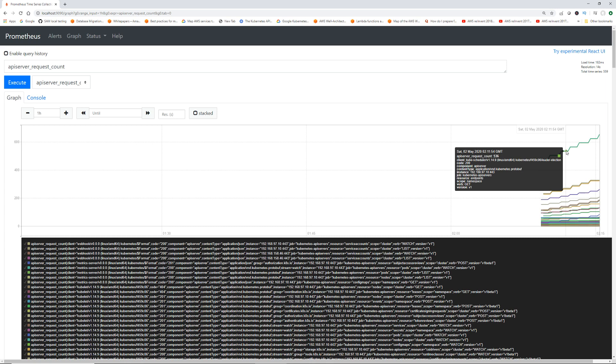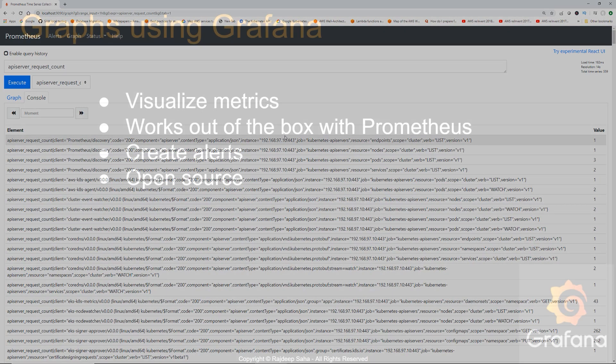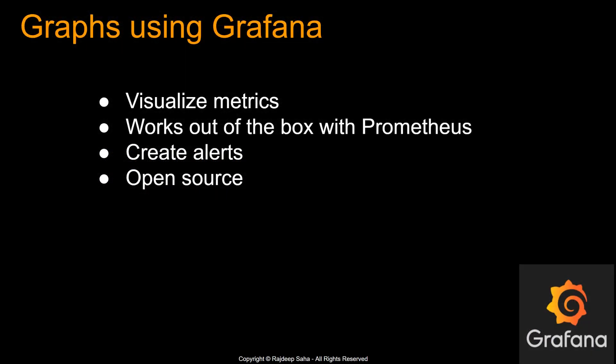What most enterprises do is run Grafana on top of Prometheus. Prometheus holds all the data in its time series database, queried using PromQL — Prometheus Query Language. Grafana is just a visualization layer on top of that data. It visualizes metrics, works out of the box with Prometheus, and is open source.